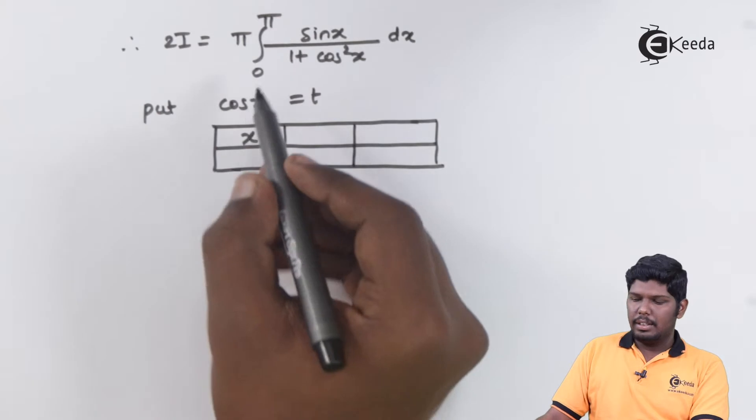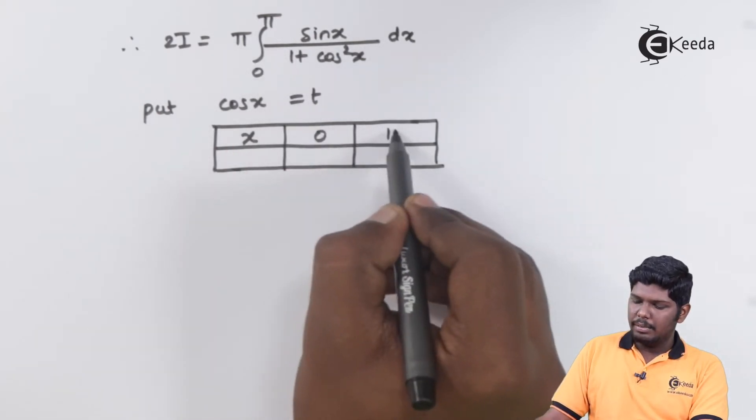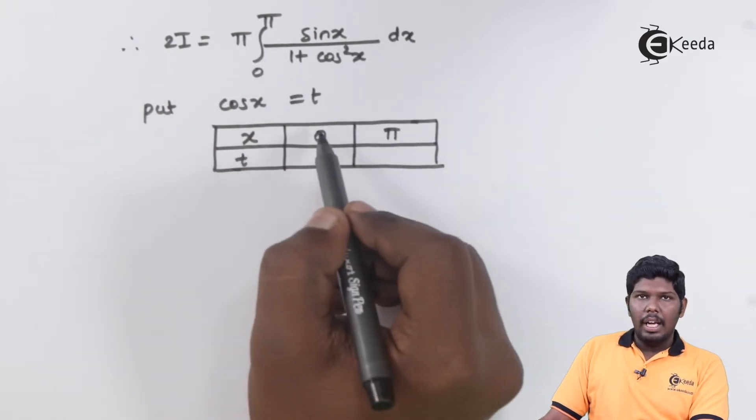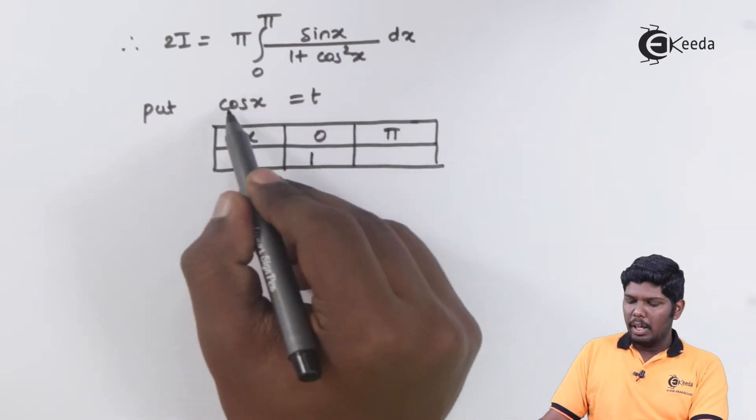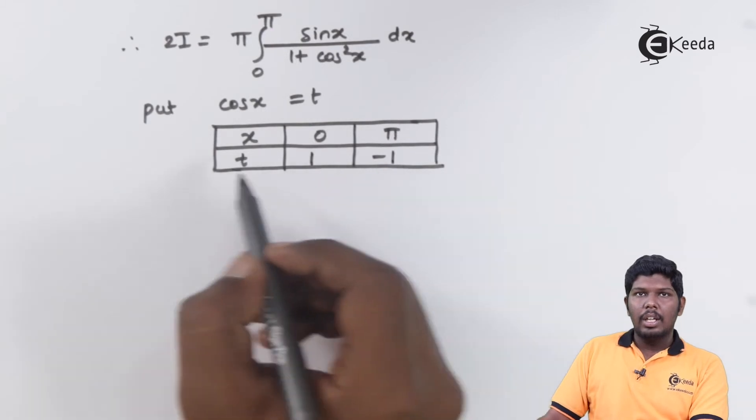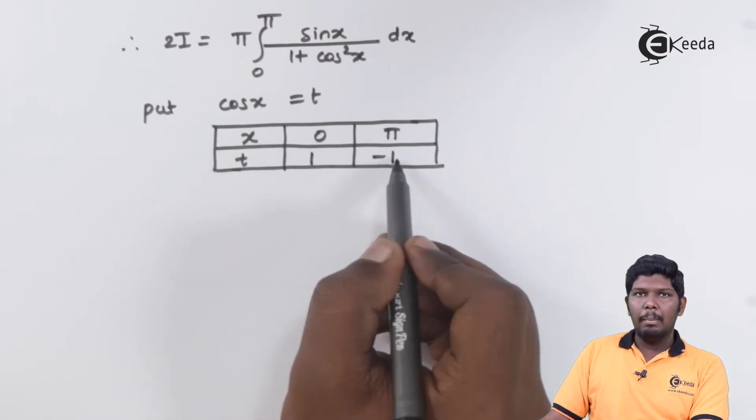The initial limits of x were 0 and pi. If I put x as 0, cos 0 will give you 1. And if I put x as pi, cos pi will give you minus 1. So the new limits are 1 and minus 1.